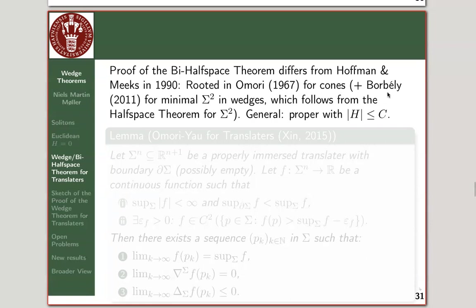There's also the argument of Borbilly, who worked on minimal two-surfaces in wedges. But in fact, in that case, a different argument applies: the result already follows from the half-space theorem. If you're a minimal surface sitting in a wedge, then you also sit in a half-space, and you cannot sit there by the half-space theorem.